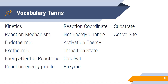We have quite an extensive list of vocabulary terms for this unit. We're going to be talking about kinetics, reaction mechanism, endothermic and exothermic reactions, energy neutral reactions, reaction energy profile diagrams, reaction coordinate, net energy change, activation energy, transition state, catalyst, enzyme, substrate, and active site.